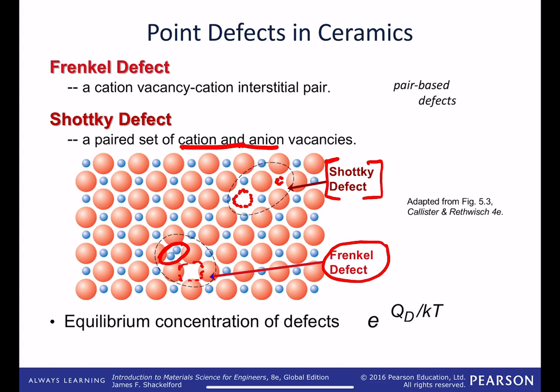And these go by a similar formula. Again, the defect in question, activation energy to do it, divided by KT. So a negative exponent on that, and that's going to go with e to the power of that value.